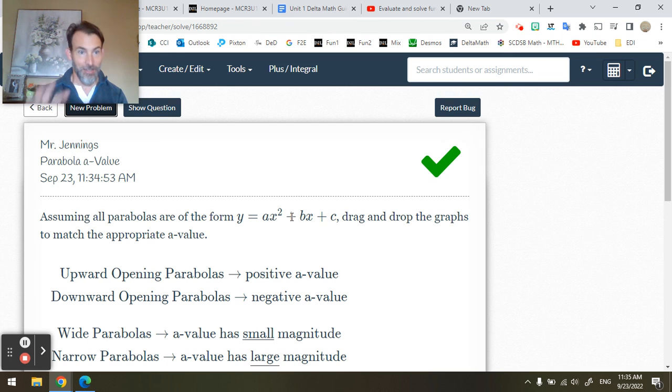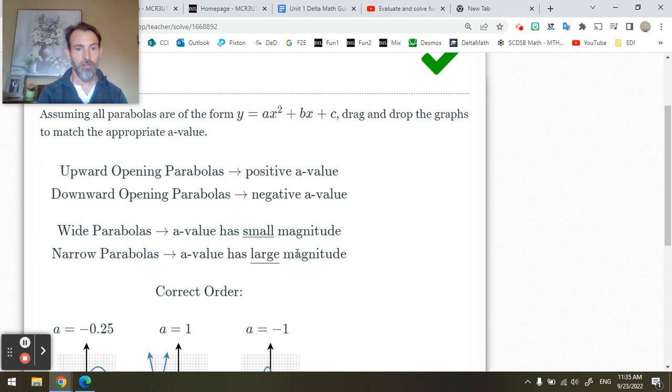So this tests your ability to just know what that a value is doing. And their explanation is very good. Okay? If it's wide, the parabola is wide, a will be small, like less than one.